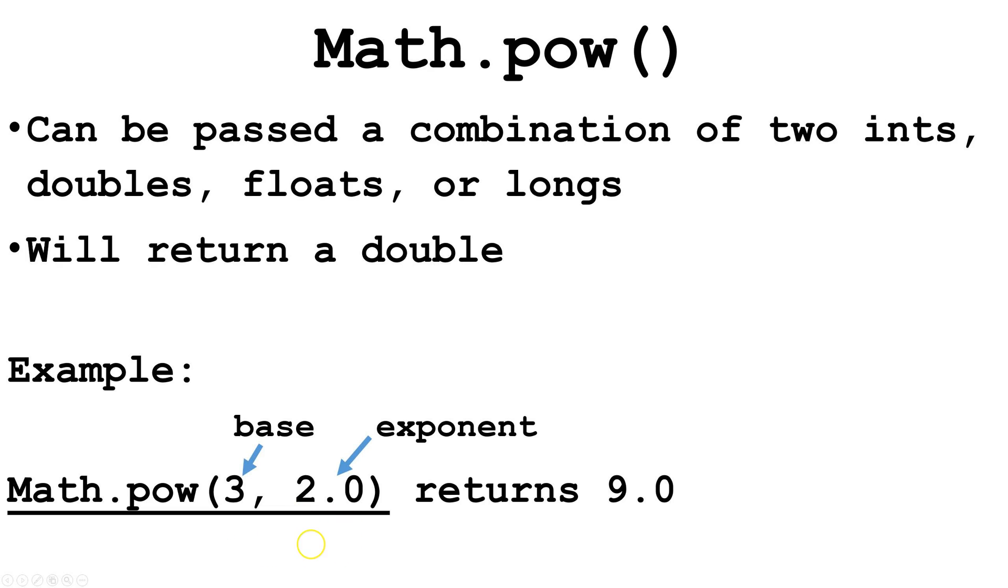In this case, our base is an int, and our exponent is a double, but it wouldn't have to be this way. 3 to the second power will be 9, so it will return the double 9.0.